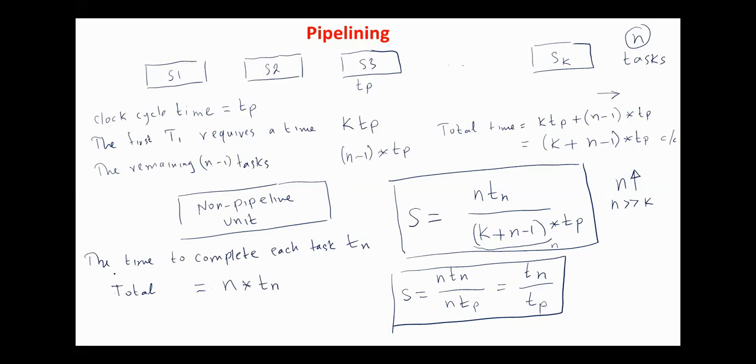Next, we assume that the time it takes to process a task is the same in the pipeline and non-pipeline system, then Tn equals KTb. And the speed up ratio will be K. And really, this is the maximum speed up that can be achieved using a pipeline system. Again, K is the number of segments.